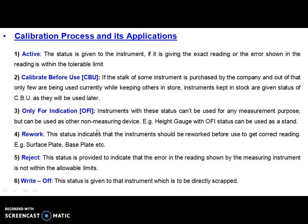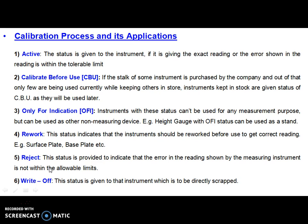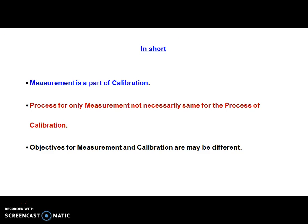In detail, the application of the calibration process helps us understand the stage of the instrument under consideration: whether it is active and can be directly used for measurement, whether adjustments are needed before use, whether the instrument can only indicate if a reading falls within a range, whether rework is required, or whether we need to directly reject or write off the instrument. All these decisions can be made using the calibration process.